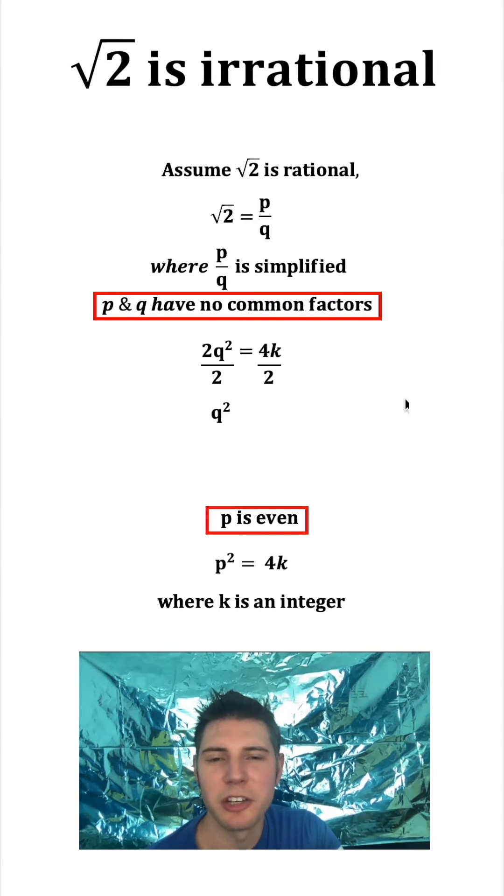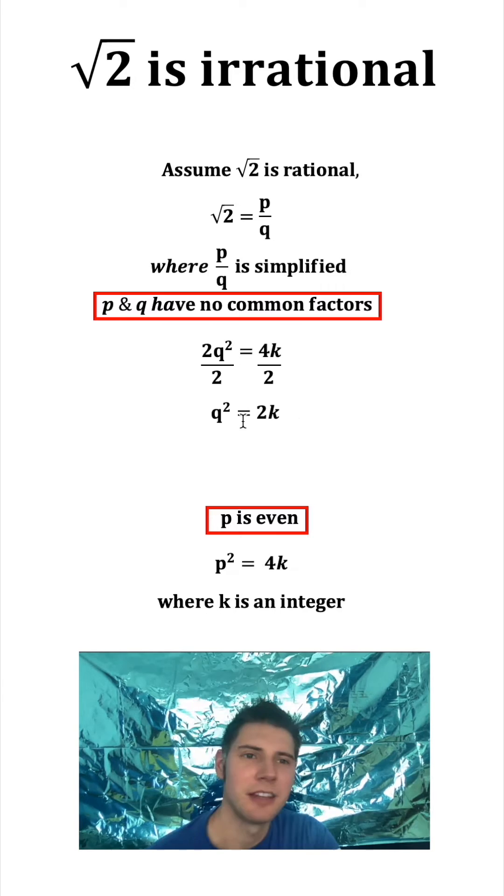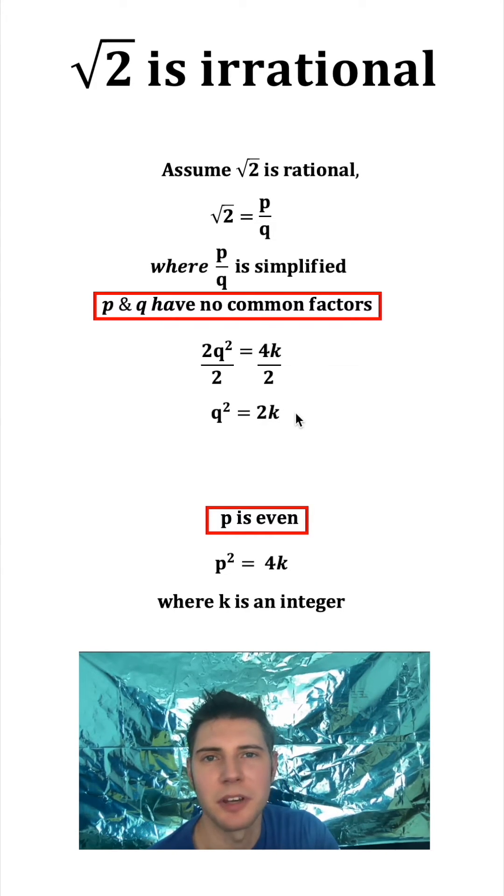Now, if we divide both sides by 2, we get Q squared is equal to 2K. But once again, we know that K is an integer. That means that Q squared has to be even, because it's 2 times some integer.